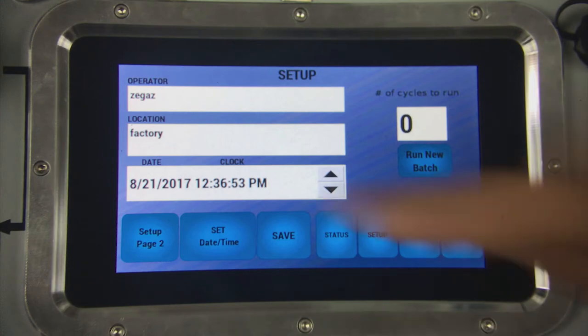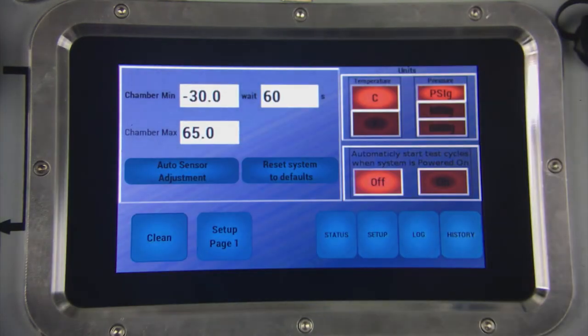On page two is where you can select your units for temperature in Fahrenheit and Celsius and pressure: PSI, bar, and kilopascal. You can also set a higher minimum temperature if you don't require the unit to cool down to the minus 30 Celsius limit to detect a dew point. You may also set a longer wait time between cycles.